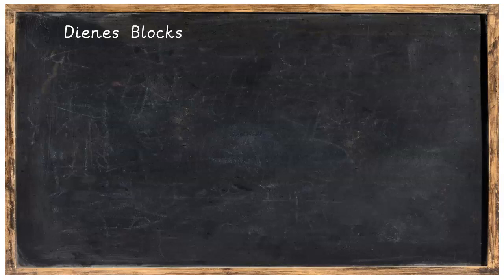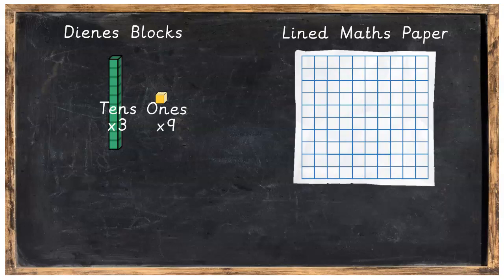Before we get started we're going to need some Dienes blocks. We're going to need three tens and nine ones. We're also going to need some lined maths paper and a pencil and eraser.